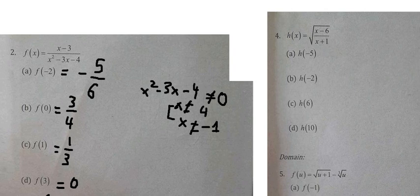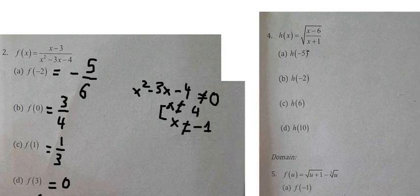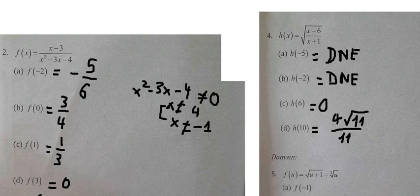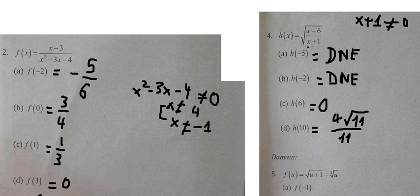Now let's go to number four. We put negative five in here and we have the answer. For the domain, we can see that s plus one cannot equal zero because we cannot divide by zero, and s minus six must be greater than or equal to zero because this involves a square root.